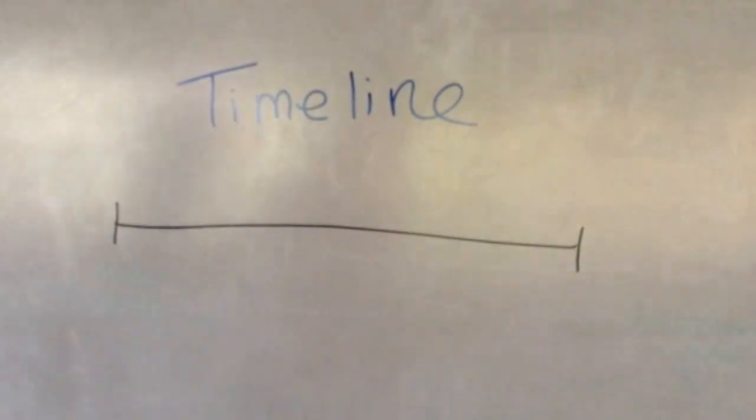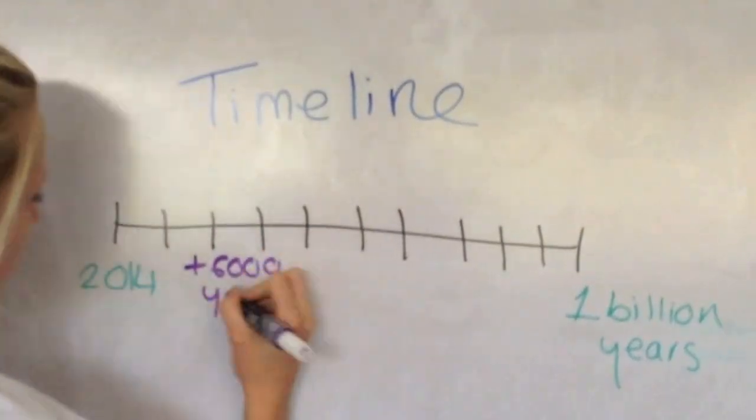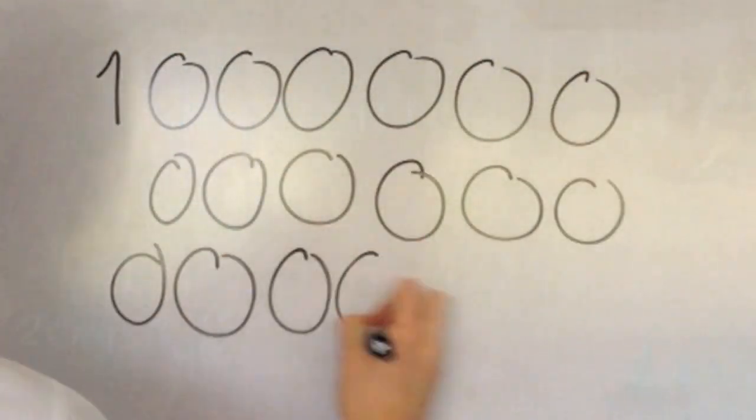In order to move the Earth within the 1 billion year time allowance, we will need to slingshot one object every 6,000 years using an object with a mass of 10 quintillion. That's 19 zeros.